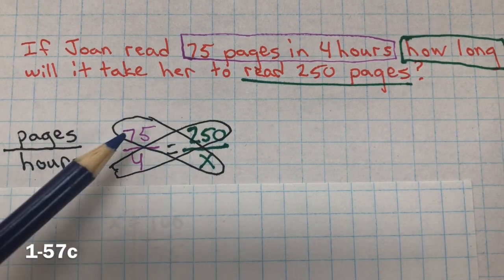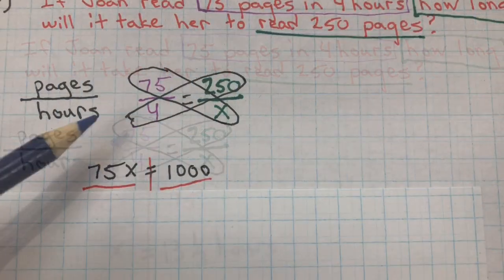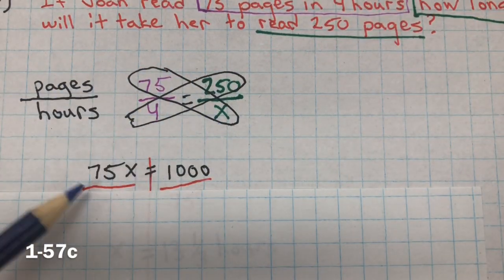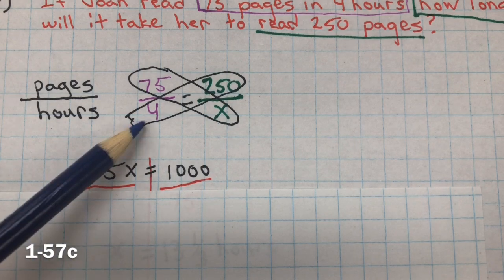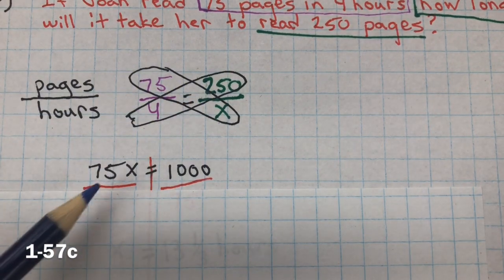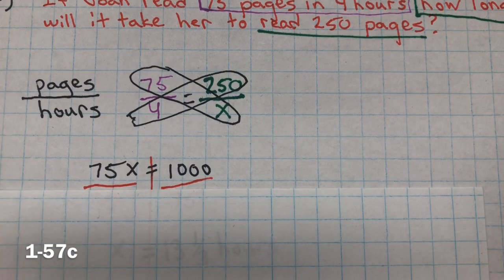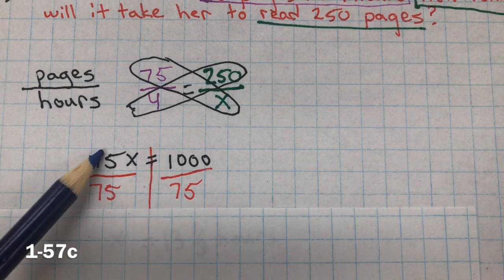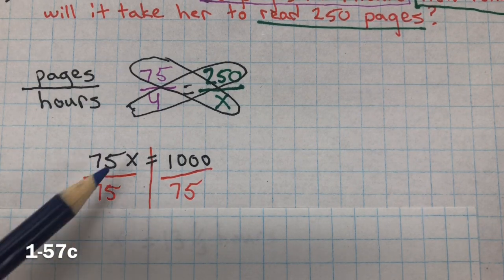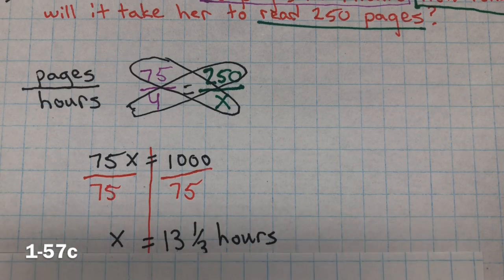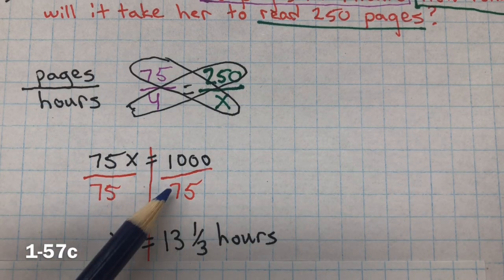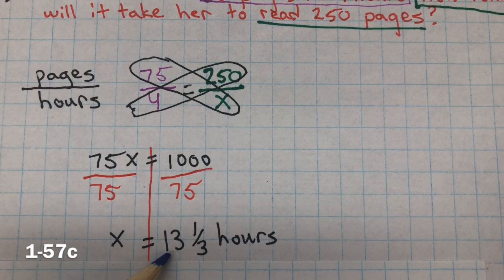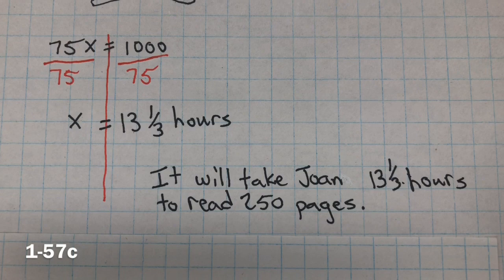So we don't know. So now we cross-multiply. We have 75 multiplied by x is 75x. 4 multiplied by 250 is 1,000. Inverse property of multiplication is division. So we divide both sides by 75. This creates a giant 1. 1 multiplied by x will give us x. 1,000 divided by 75 is 13 and one-third. So it will take Joan 13 and one-third hours to read 250 pages.